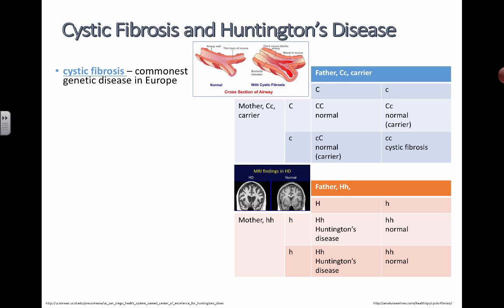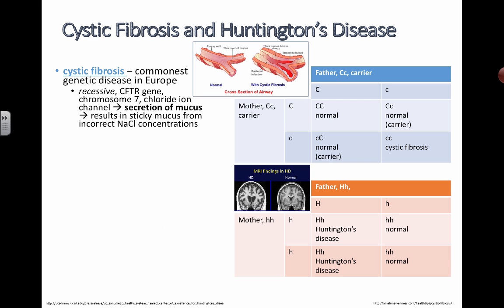Cystic fibrosis is significant because it's one of the most common genetic diseases — actually the commonest genetic disease in Europe. It's a recessive allele, represented with a small C. Be careful when writing big C's and small C's — make your small C's really small so you can tell the difference. It's a recessive allele of the CFTR gene located on chromosome number seven, and it messes with a protein channel that allows chloride ions to get through.